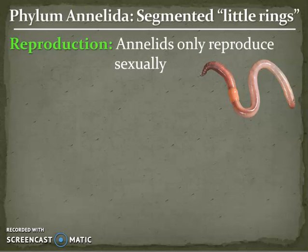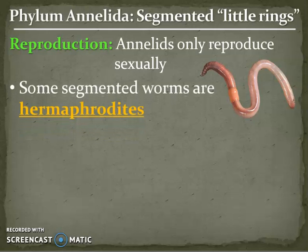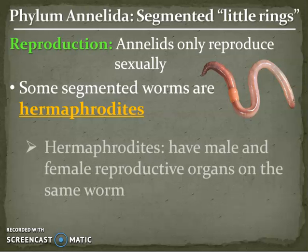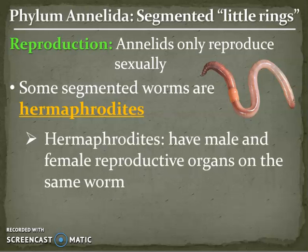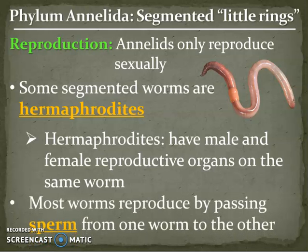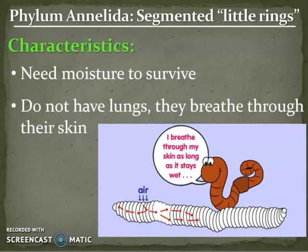As far as reproduction goes, they reproduce only sexually, and some of them are hermaphrodites - meaning some of them have male and female reproductive organs on the same worm. But most of them reproduce by passing sperm from one to another. They absolutely need moisture to survive. They do not have lungs - they actually breathe through little holes in their skin, which is why they must stay wet.